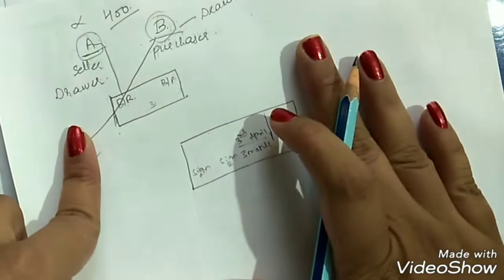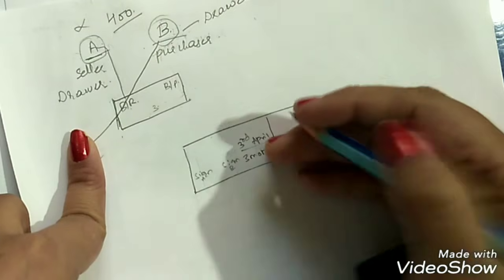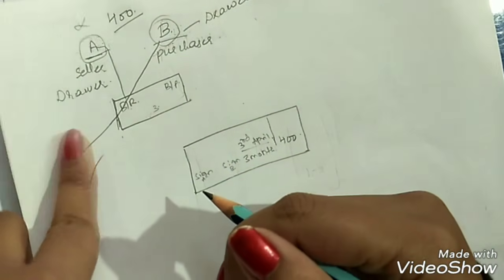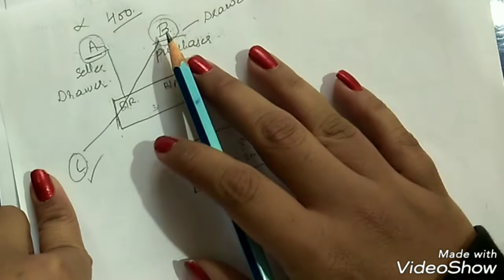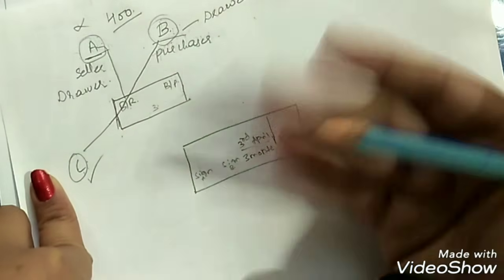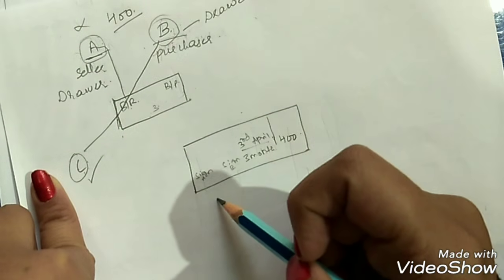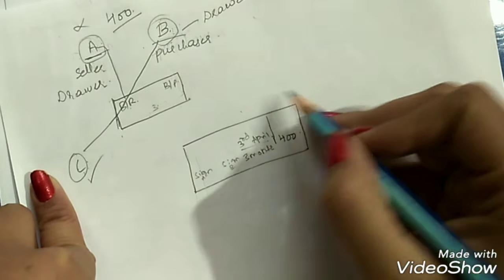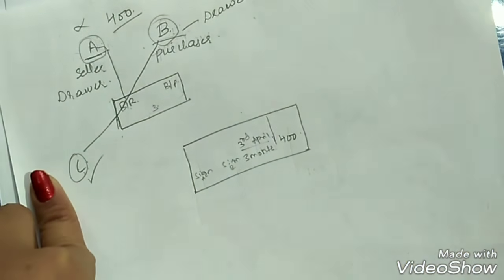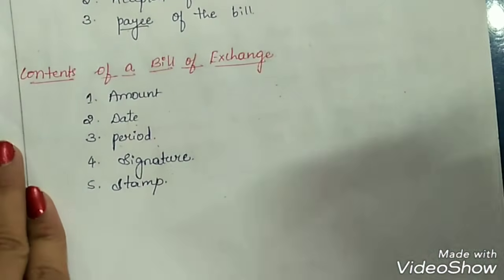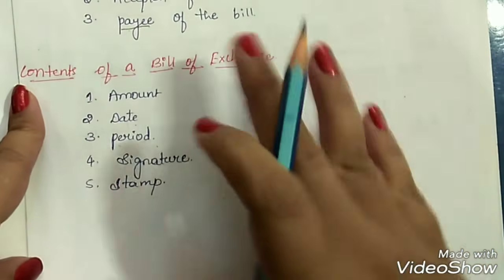Fifth is the stamp. Having a legal stamp on the bill is very necessary — it shows the bill is legal. Without a stamp, we cannot call it a legal bill. If on the maturity date B disagrees to pay or claims he never signed, A cannot file a case against B without a stamp on the bill — it would just be a piece of paper.